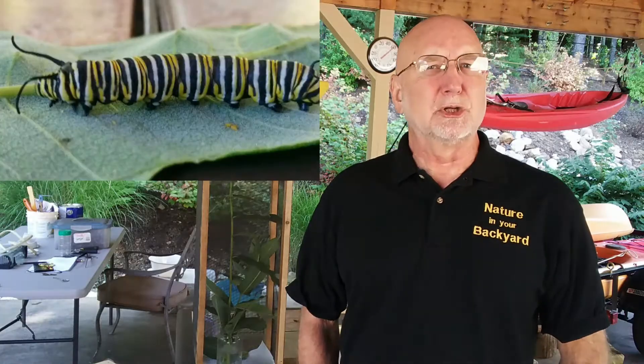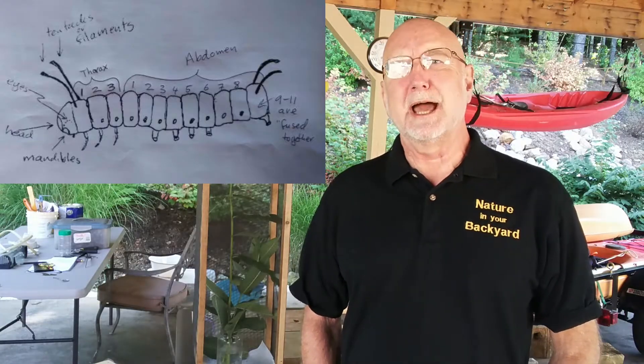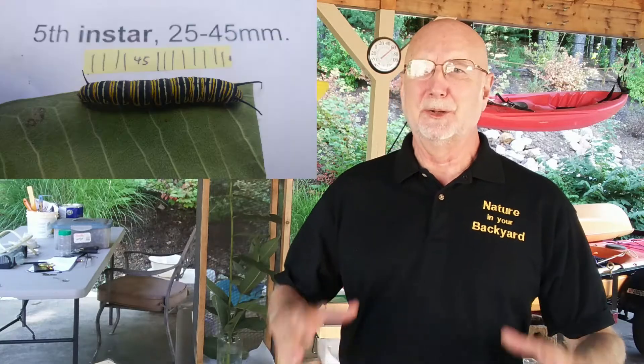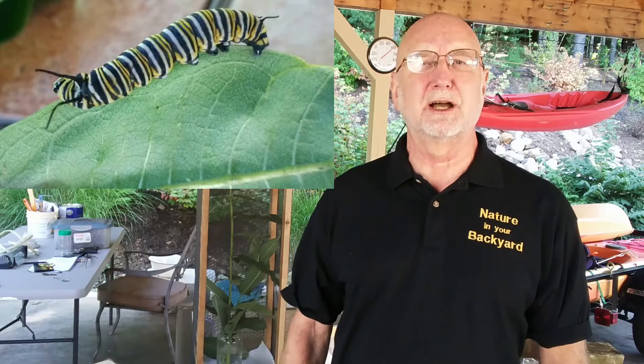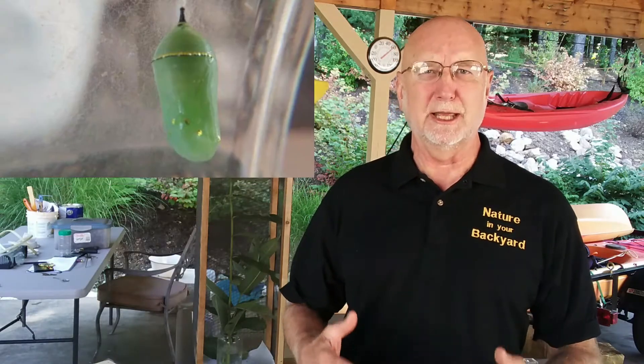We started looking at milkweed, finding eggs, and we've talked about caterpillars, caterpillar anatomy, and instars. Now in this episode today, we're going to look at what happens when the caterpillar is finished eating. When he's gone through his five instars and his final molt, he's done eating. What happens next? They form a J-larva and a chrysalis, and we're going to look at that in detail.